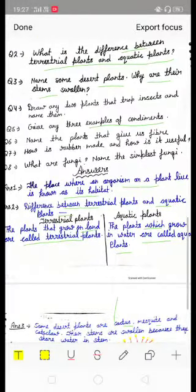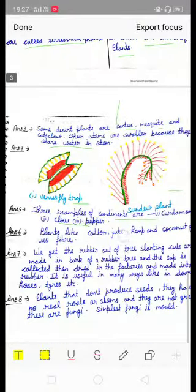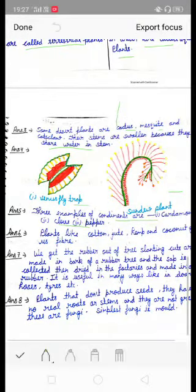Question number six: name the plants that give us fiber. Plants like cotton, jute, hemp, and coconut give us fiber.